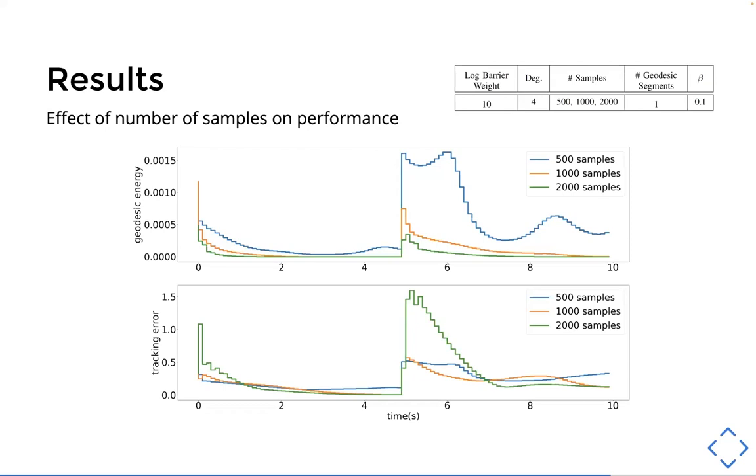And it's also interesting to note that though the 2000 sample controller consistently has the lowest geodesic energy, it actually has a big spike in the L2 norm tracking error. And I think in order to stabilize the system and make the geodesic energy exponentially decrease, the sphere robot has to deviate a greater amount from the reference trajectory in order to push the box back towards the reference trajectory leading to that spike in error. And I guess it's not necessarily a bad thing.